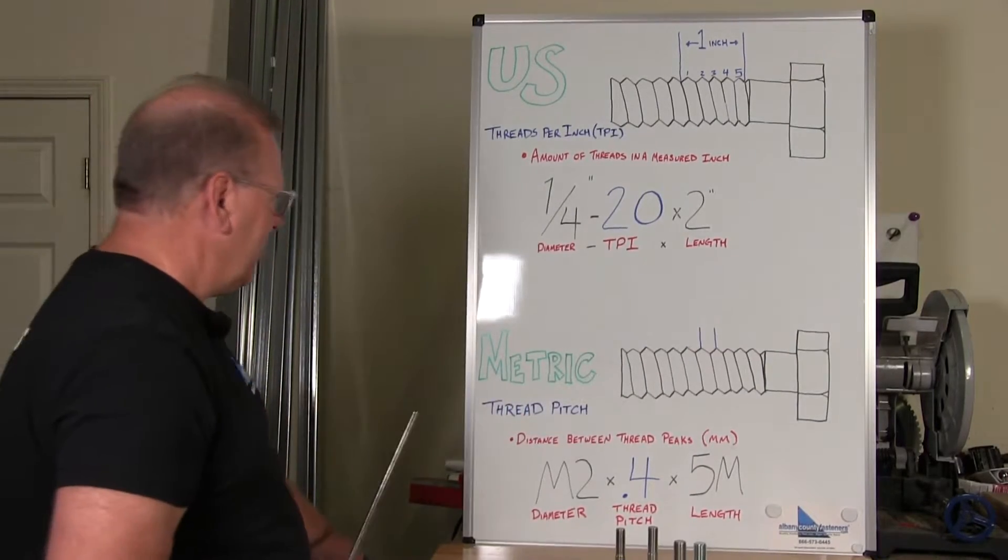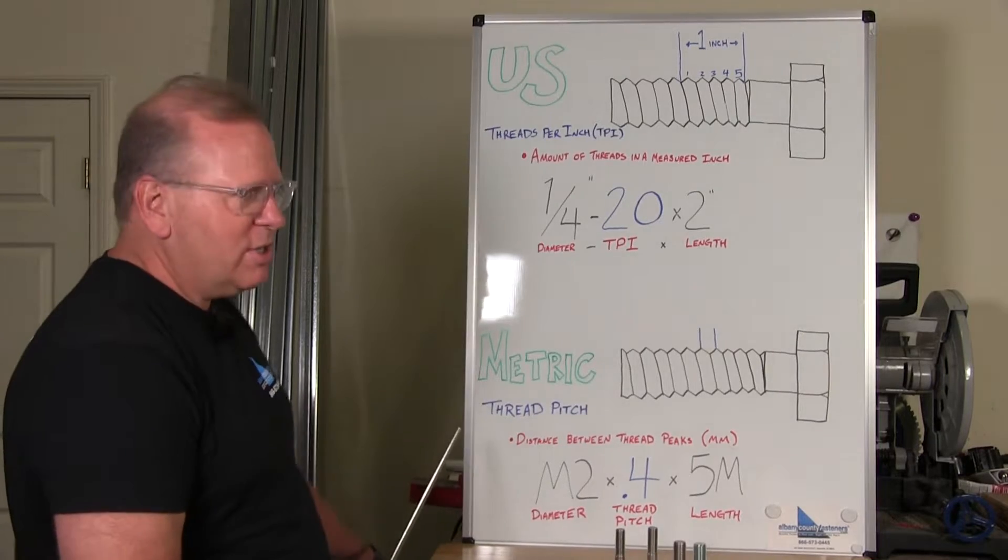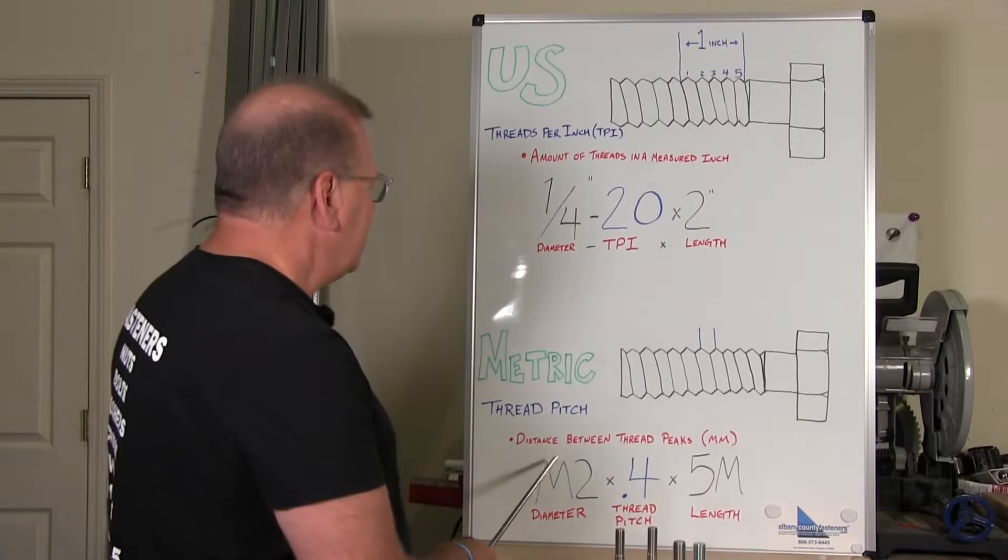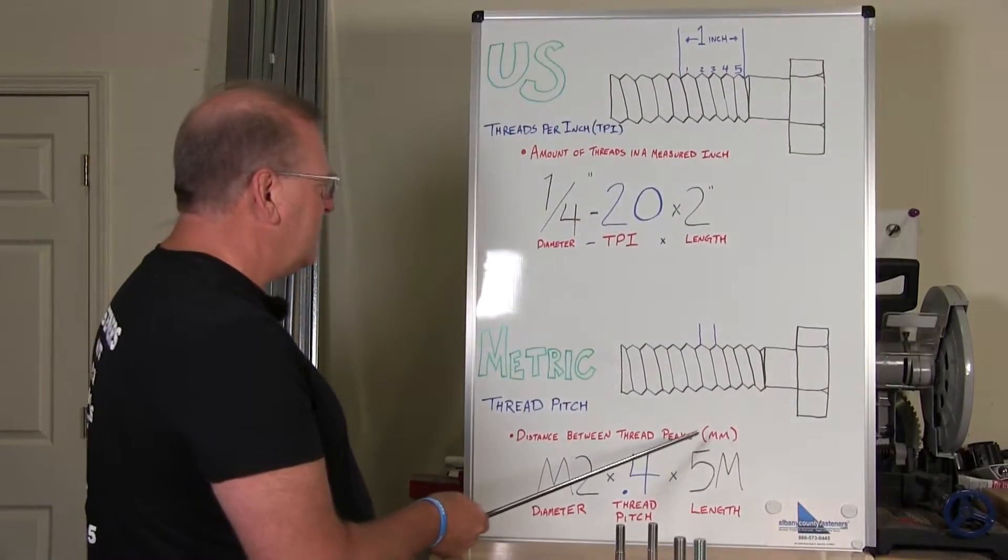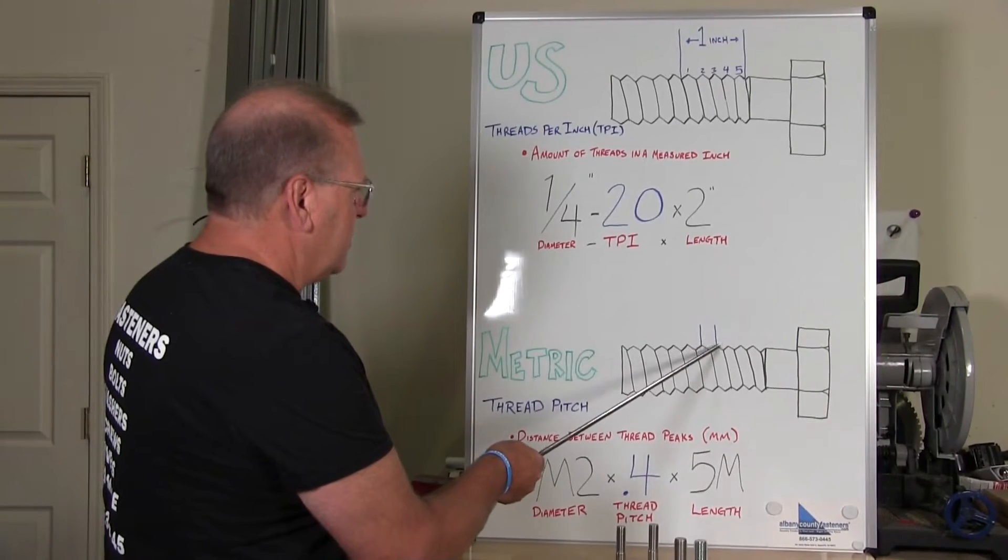In metric it's different. In metric it's the thread pitch, not threads per inch. Thread pitch is the distance between the peaks in millimeters. So here's a peak, here's another peak.